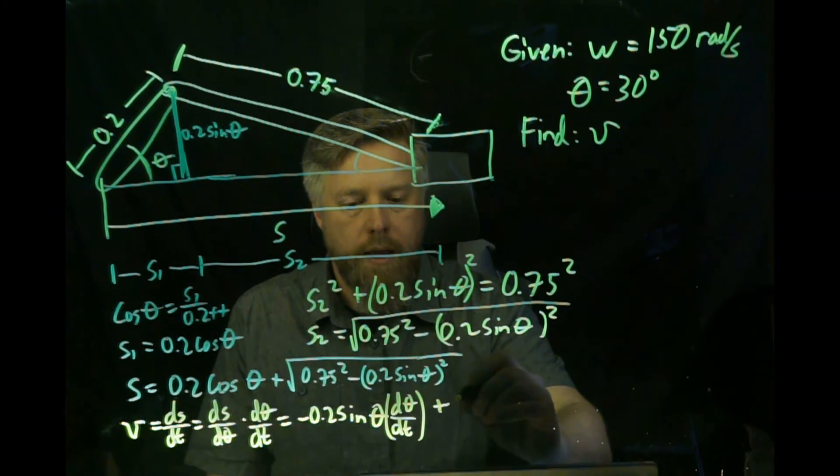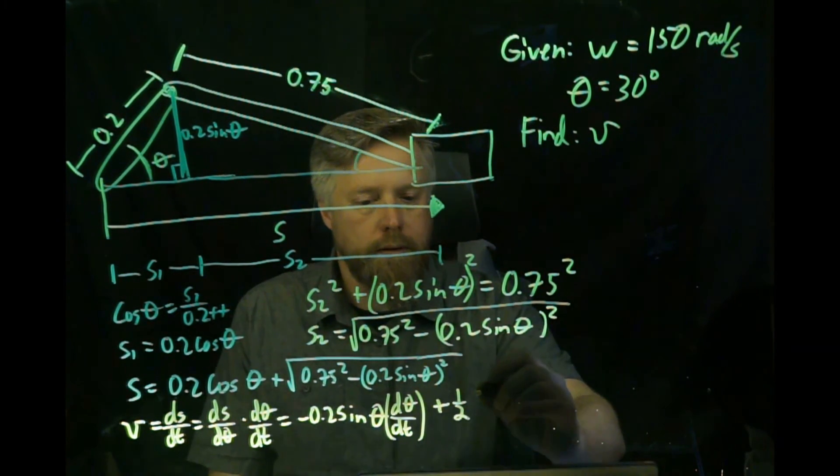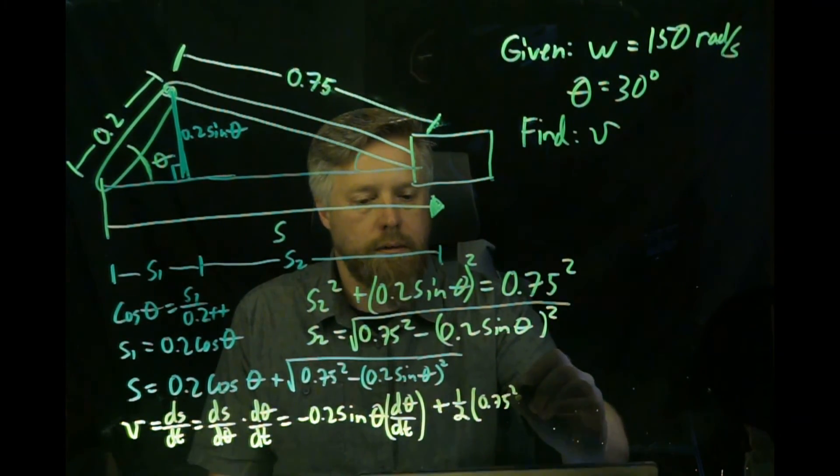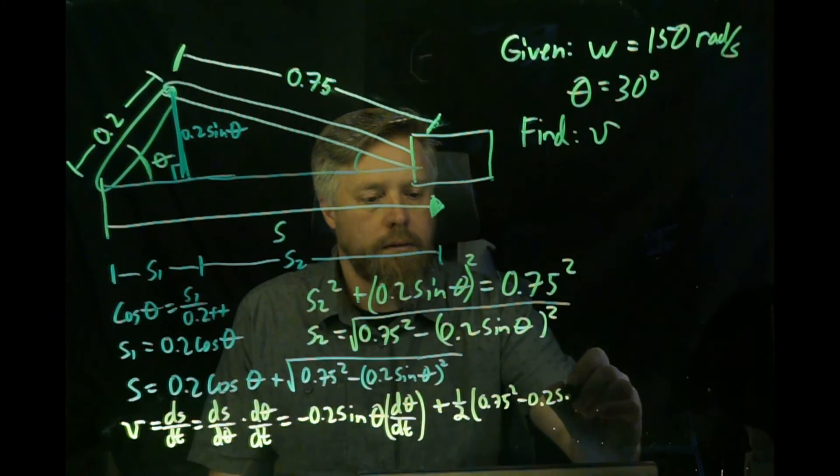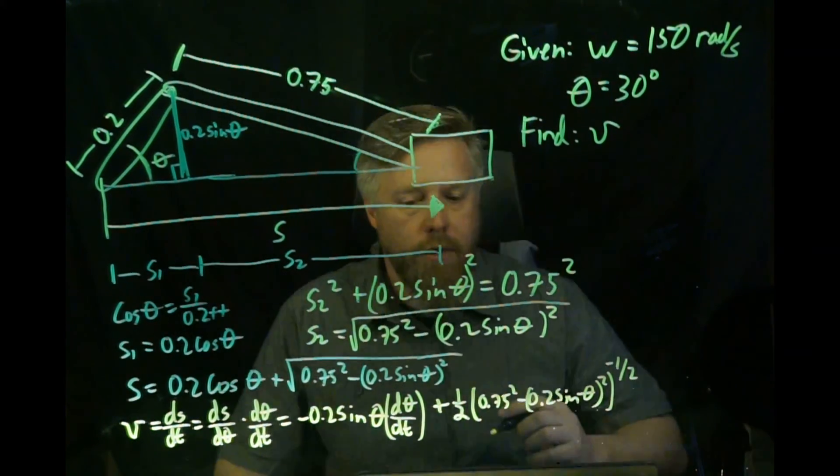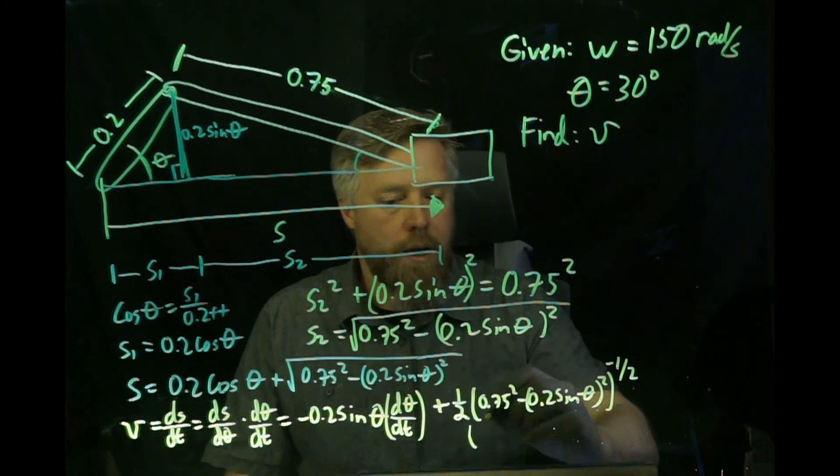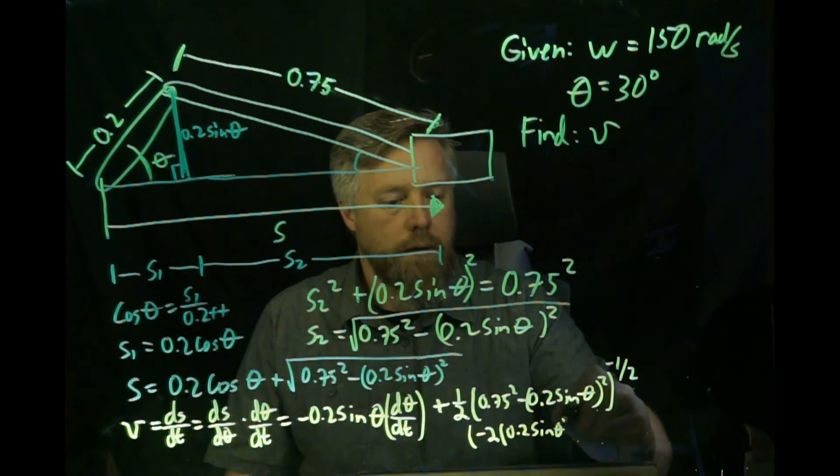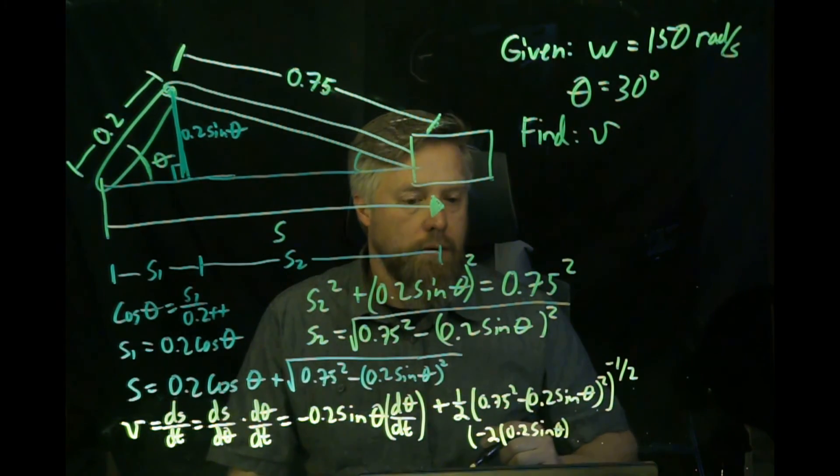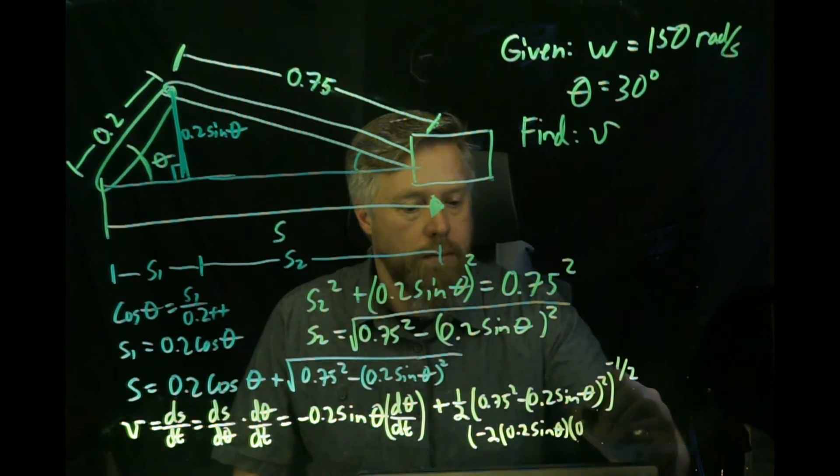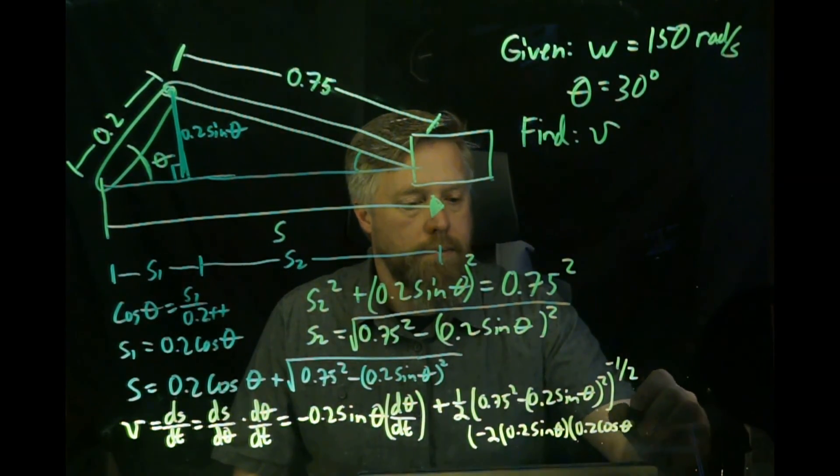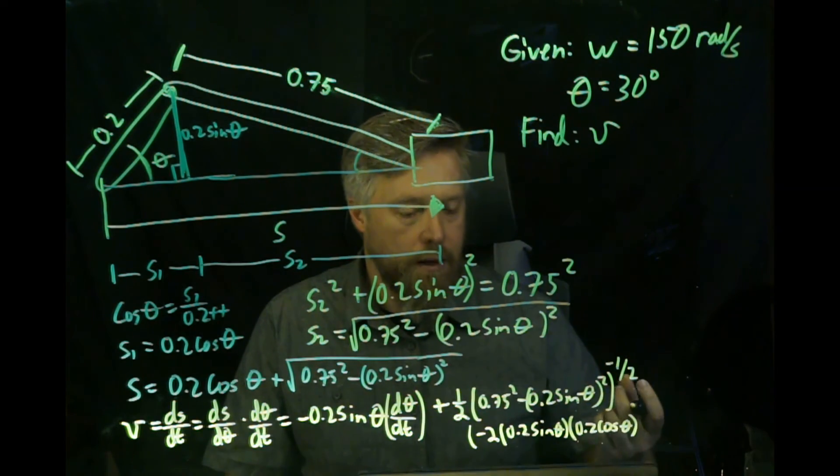The second term is a little more challenging. First, we're just going to do the power of one-half and then everything underneath it to the negative one-half. Then multiplied by that, we need to take the derivative of the inside. That first part is constant, so that would be zero. Second part, we'll do the power first. We've got negative 2 times 0.2 sine theta to the 1. Now we need to take the derivative of the inside, the 0.2 sine theta, which would be 0.2 cosine theta. Then we need to take the derivative of theta, which is d theta/dt.